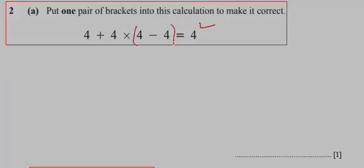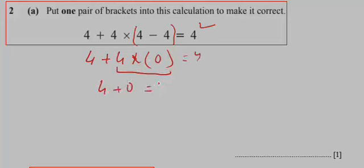If we place a bracket here, it will be written as 4 + 4 × (4 - 4) = 4. When we calculate, 4 - 4 is 0, and when we multiply 4 with 0, it becomes 0. So 4 + 0 = 4. This is the right place where we can insert the bracket.